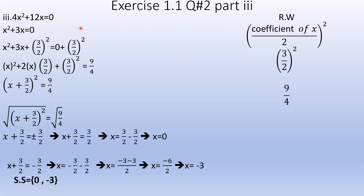Question 2, Part 3: 4x² plus 12x equals 0. We solve by completing the square. The x² coefficient is 4, not 1. So we divide the entire equation by 4. This gives x² plus 3x equals 0.